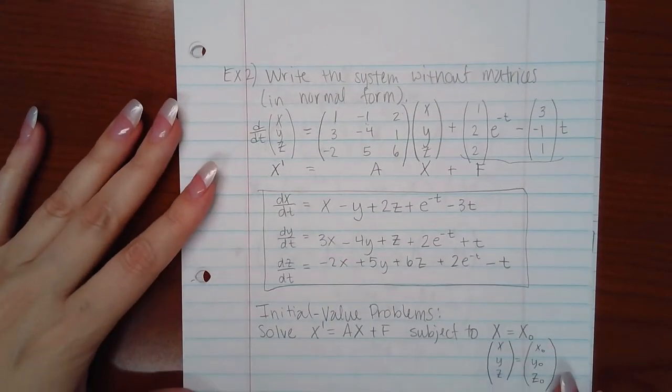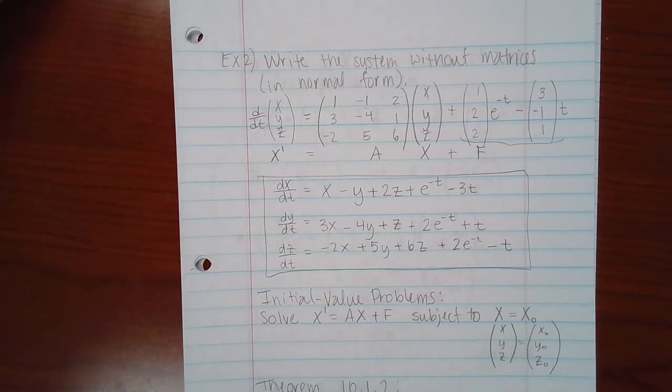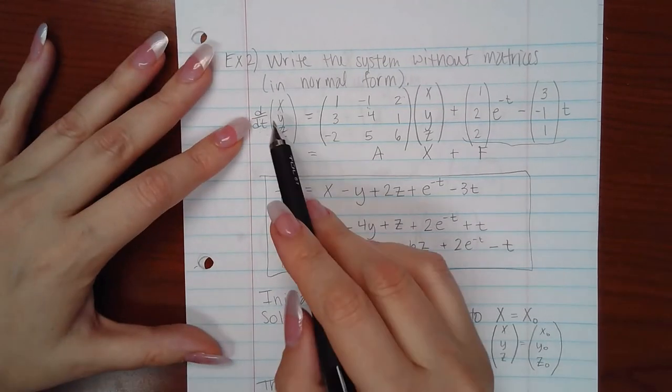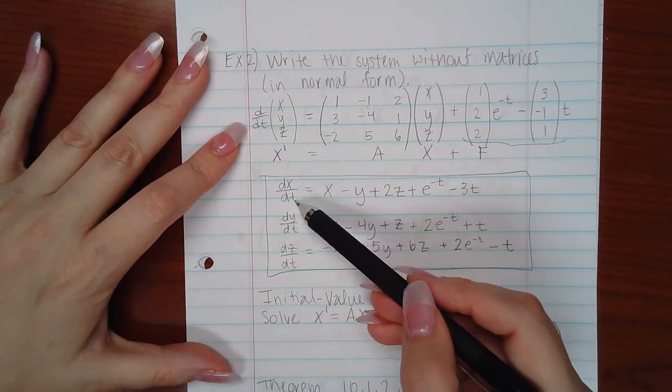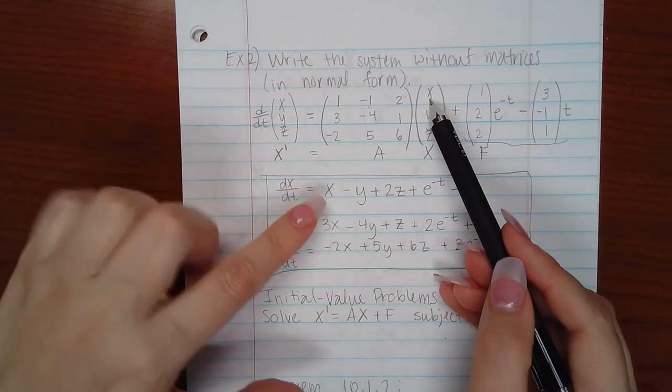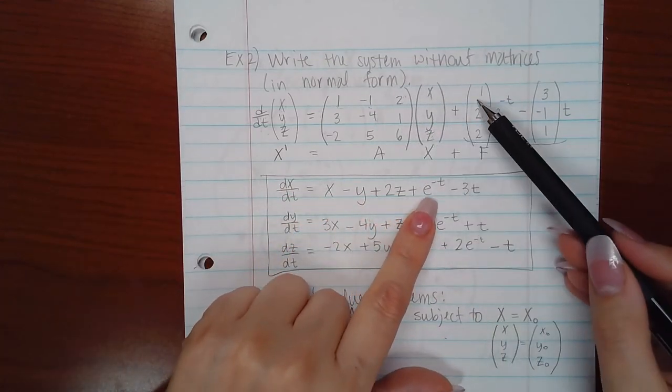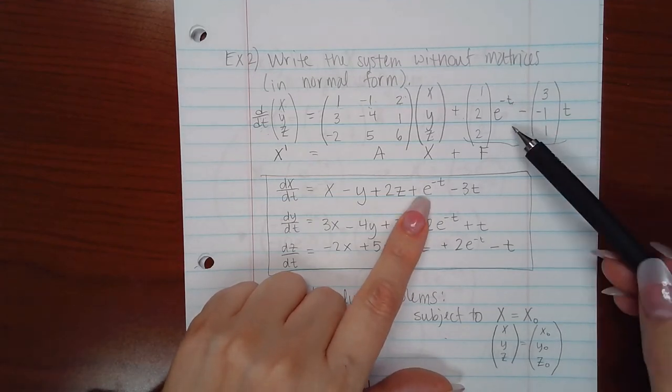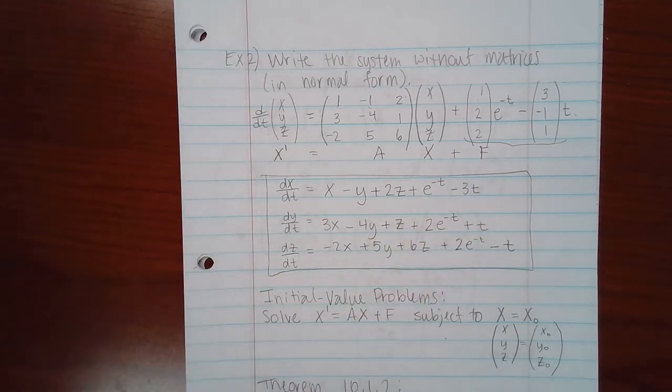For the second example, we want to write this, which is semi in matrix form, but we want to write this semi-matrix form into its normal form. So you have the derivative, I'm going to do it row by row. So the derivative of X, DX/DT, times 1X, negative 1Y, and 2Z, plus 1e to the negative T, which is this term here, minus 3T, which is this term here. Then we move on to the second row. We've got DY/DT, which is here.